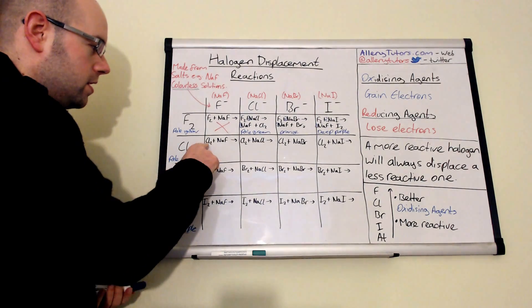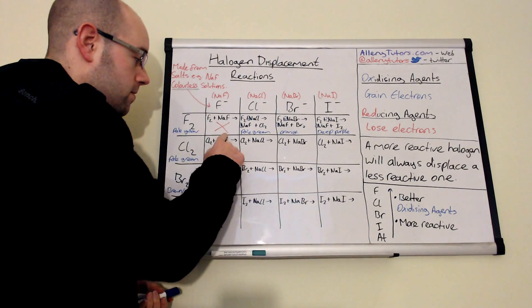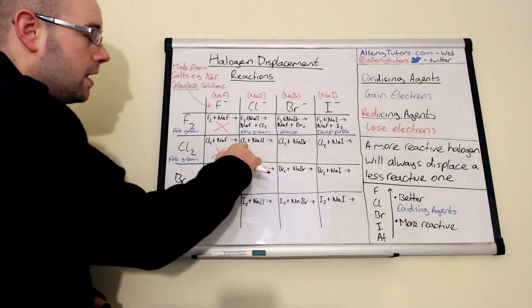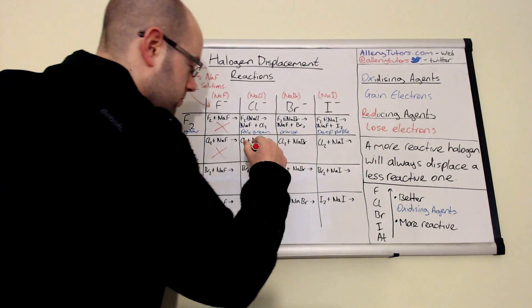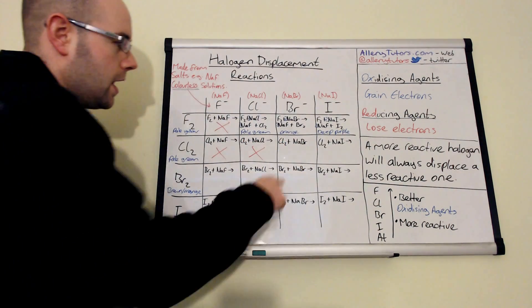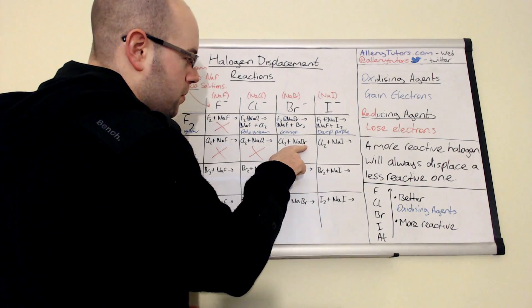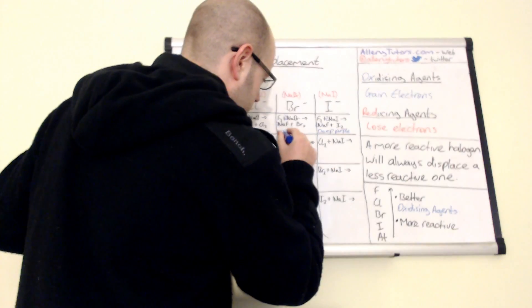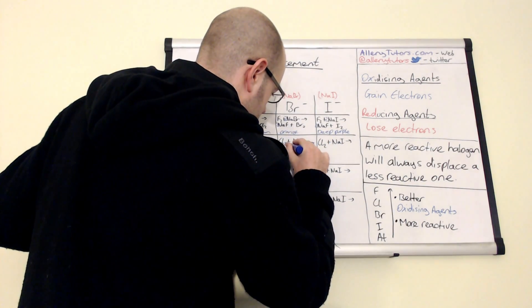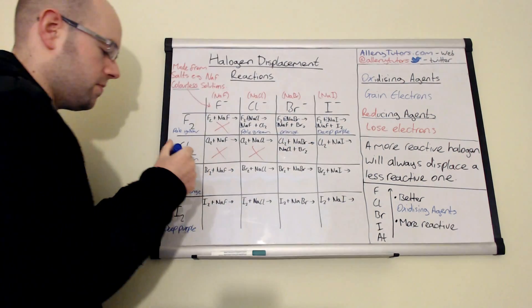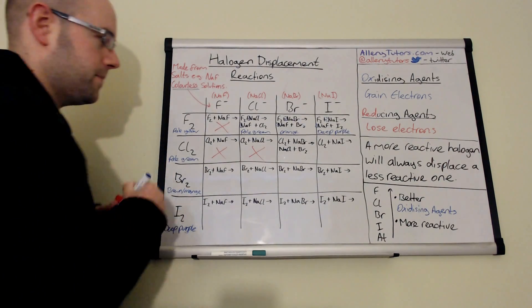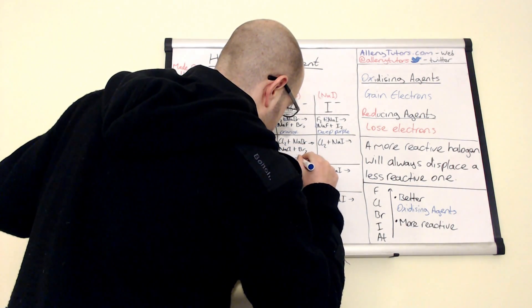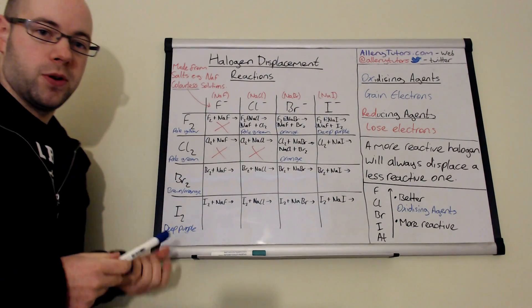Coming down to chlorine: Cl2 reacting with sodium fluoride — fluorine is more reactive than chlorine, so we get no reaction. Chlorine reacting with chloride — equally reactive, so no reaction. Chlorine is more reactive than bromine, so we do get a reaction. Products: NaCl plus Br2. The orangey colour from bromine means that when we react these two together and get an orange solution, we know we've formed bromine.